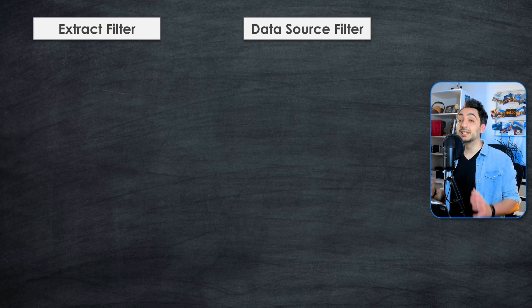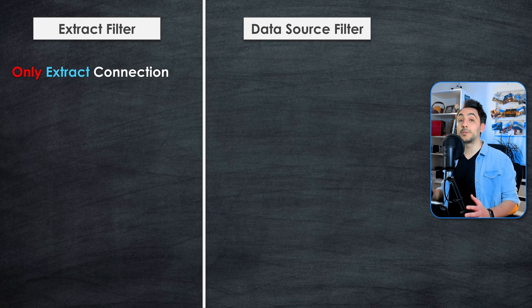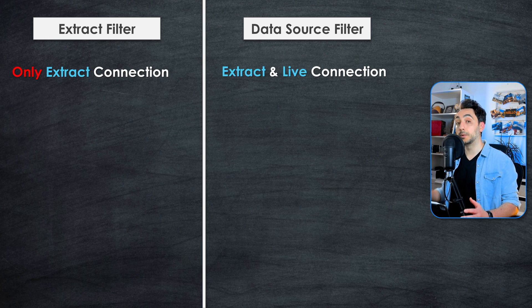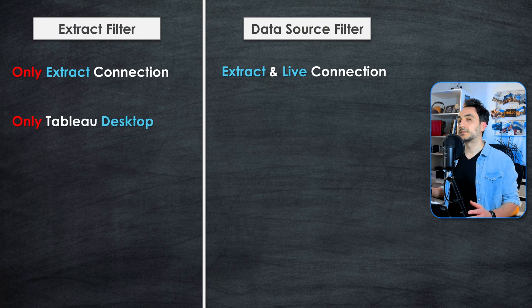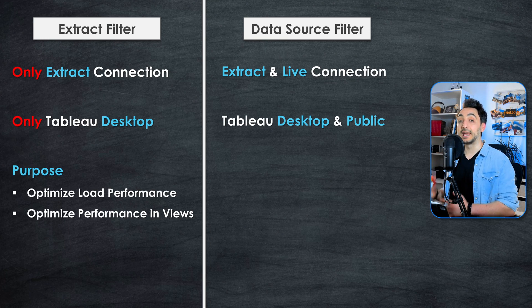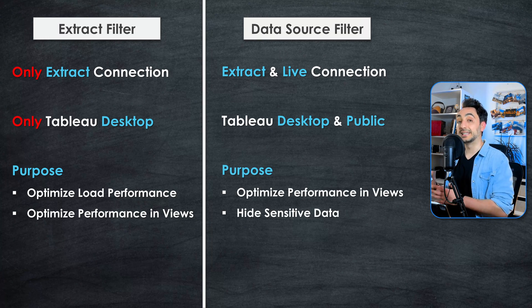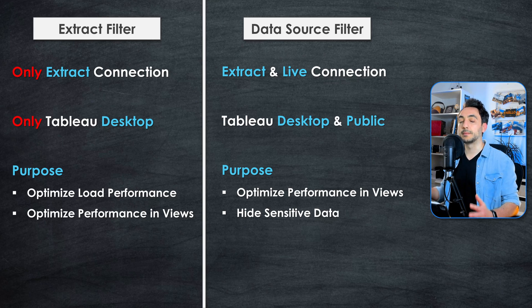What are the main differences between the extract filter and the data source filter? The extract filter can only be applied on extract connections, while the data source filter works on both extract and live connections. The extract filter is found only in Tableau Desktop, whereas the data source filter is available in both Tableau Desktop and Tableau Public. The extract filter optimizes both loading performance and response time, while the data source filter focuses on response time and hiding sensitive information.